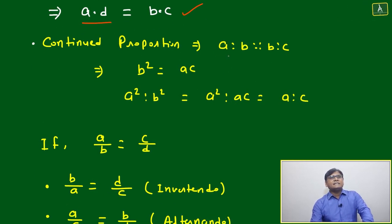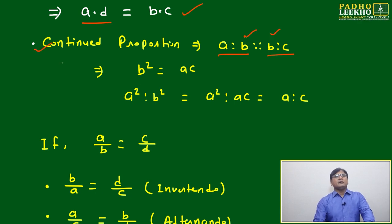One special case: if the middle term is the same, meaning a ratio b proportional to b ratio c, where both middle terms are b, then we can say it is a continued proportion. If the middle term is the same, then b² will equal ac.